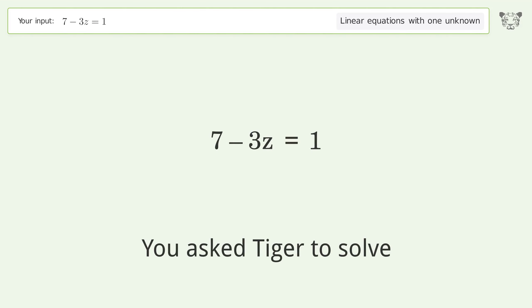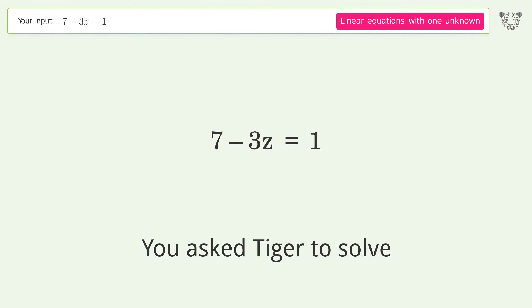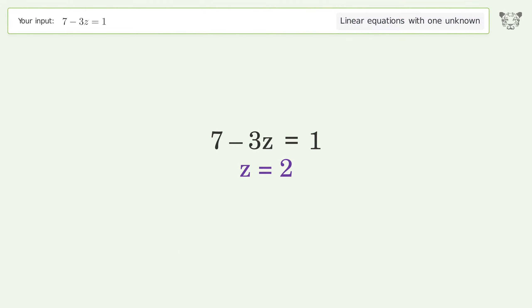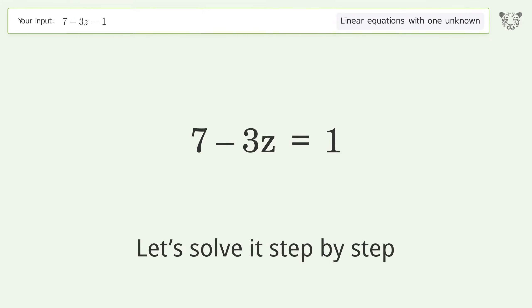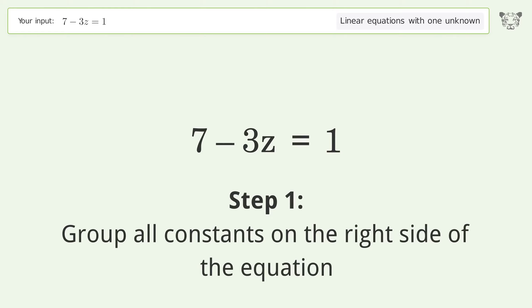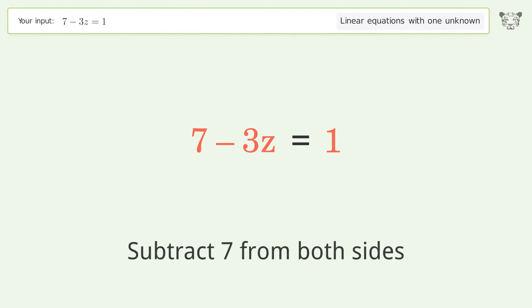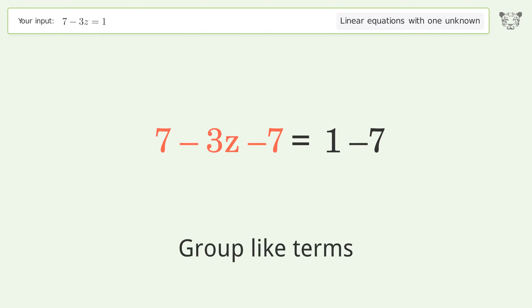You asked Tiger to solve this — it deals with linear equations with one unknown, and the final result is z equals 2. Let's solve it step by step. Group all constants on the right side of the equation: subtract 7 from both sides, then group like terms.